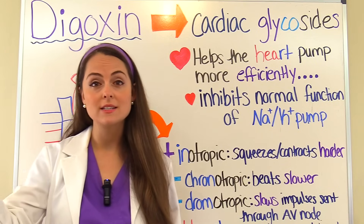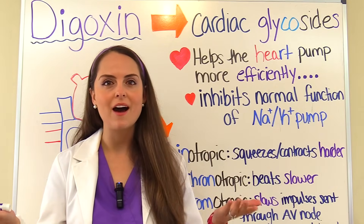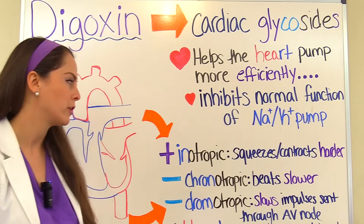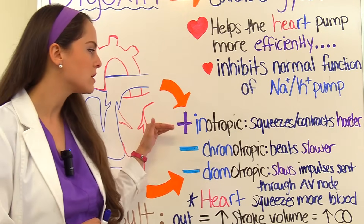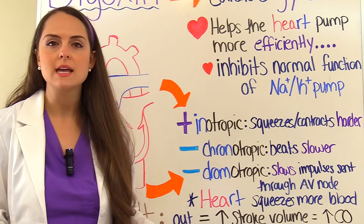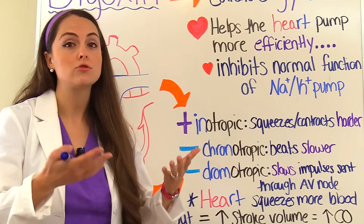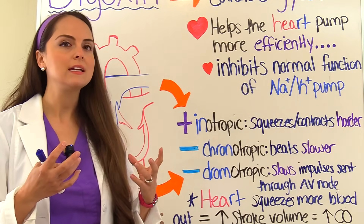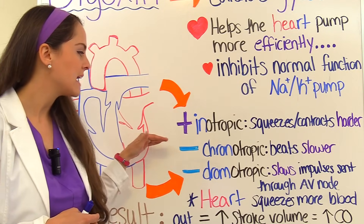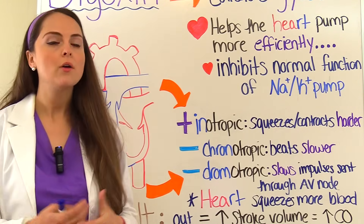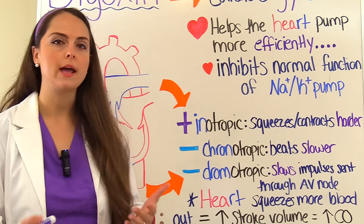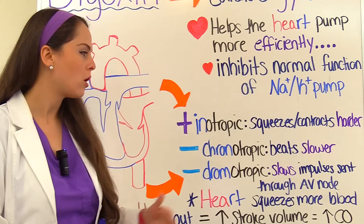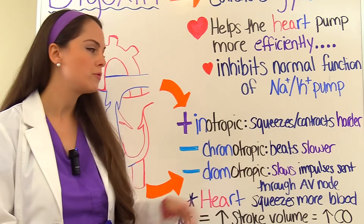Digoxin affects the heart in either a positive or negative way, and you want to remember these actions because tests love to ask about them. Digoxin causes a positive inotropic effect, meaning it causes the heart to contract harder, increasing cardiac contractility and stroke volume. It also has a negative chronotropic effect, causing the heart to beat at a slower rate. And it causes a negative dromotropic effect, causing impulses to be sent slower through the AV node.